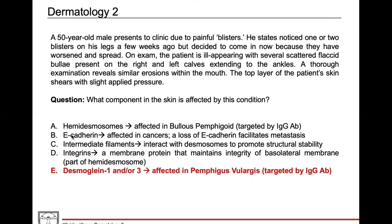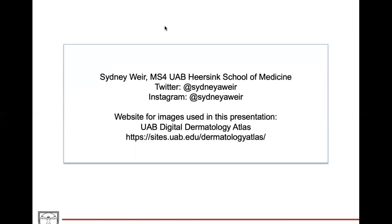Intermediate filaments are the structural membrane proteins that interact with desmosomes to promote stability. Integrins are membrane proteins that maintain integrity of the basal-lateral membrane. That concludes this case. If you have any questions or would like to see a specific case discussed, please feel free to reach out.